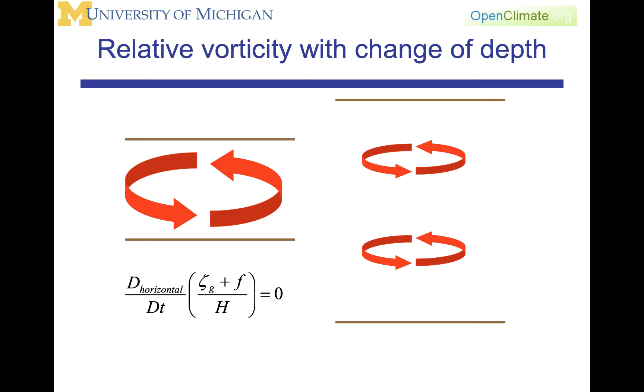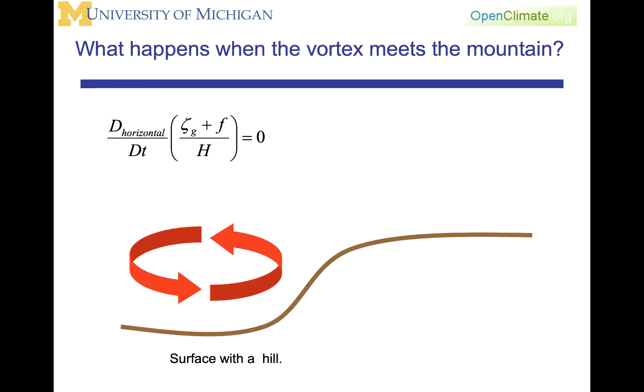Then if H increases, then zeta has to change such that zeta plus f over H remains constant. This gives us then the tools of what happens when the vortex hits the mountain. What we need to know is, is the depth of the column going to increase or is it going to decrease? Or does the air compress or expand as it goes up and over the mountain?